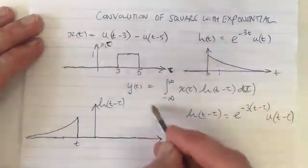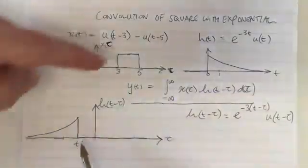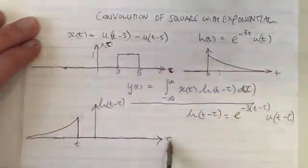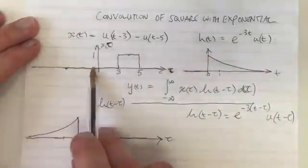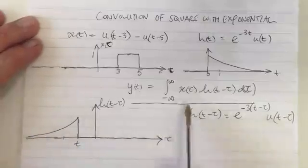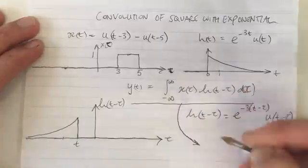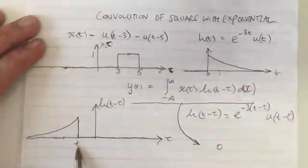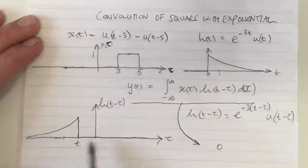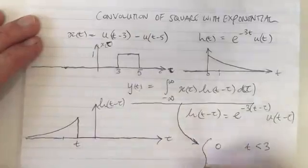Multiplying the two functions together: for the chosen value of t drawn, the two functions don't overlap — one is nonzero only where the other is zero — so the product is zero everywhere and the convolution equals zero. This is the case for all values of t less than 3.